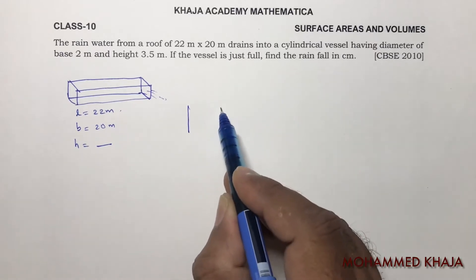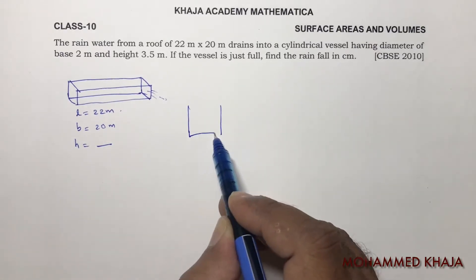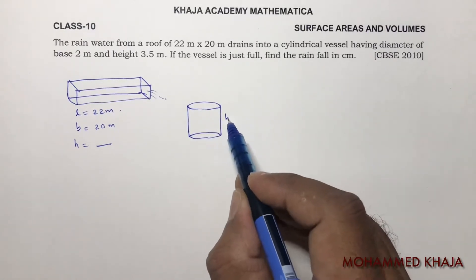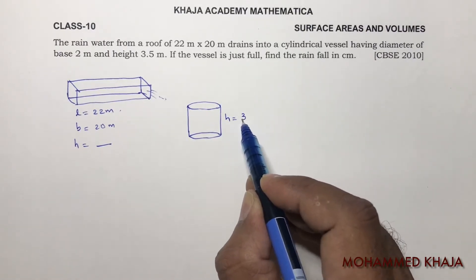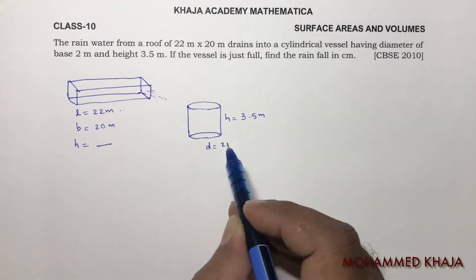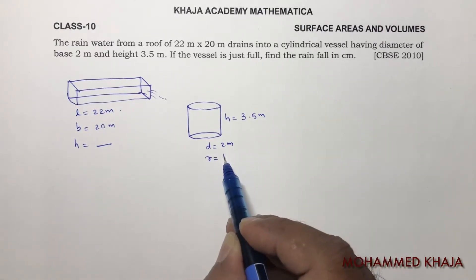The rainwater is completely filled in the cylindrical vessel whose height is 3.5 meters and diameter is 2 meters, so radius will be 1 meter.